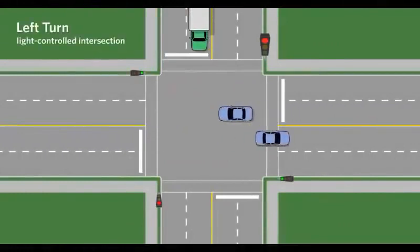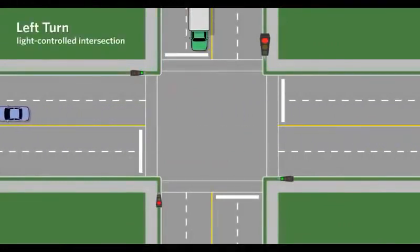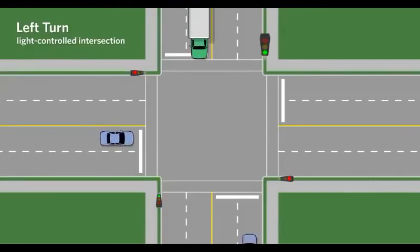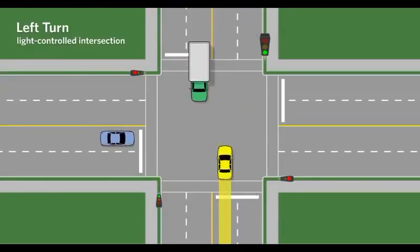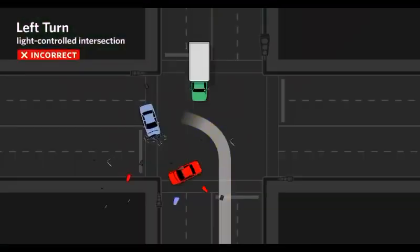A large vehicle waiting to make a left turn from the opposite side may obstruct your view of oncoming vehicles. Taking a risk and turning left while unsure of oncoming traffic may result in a collision.